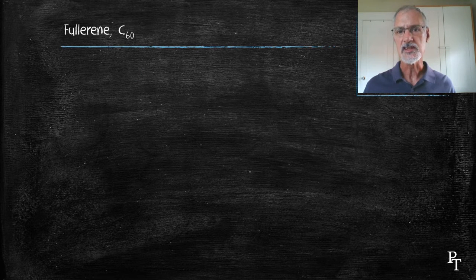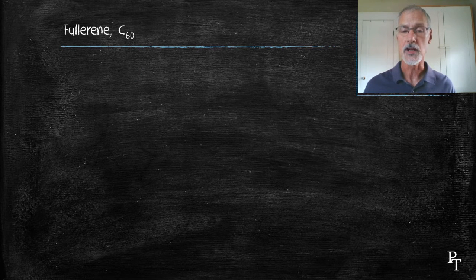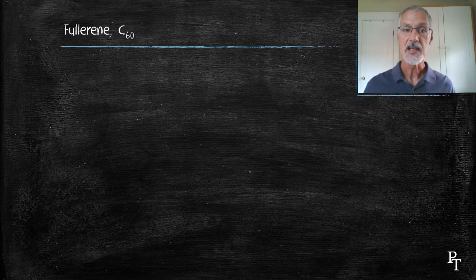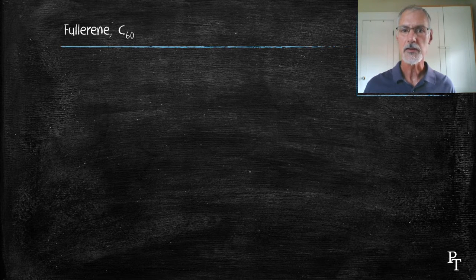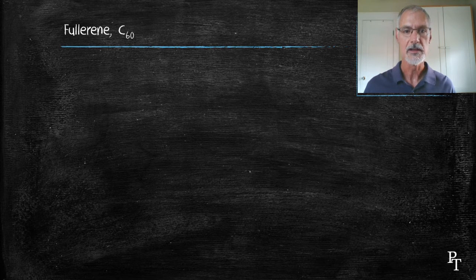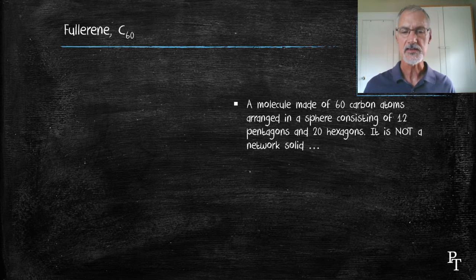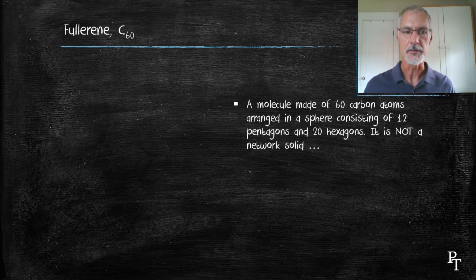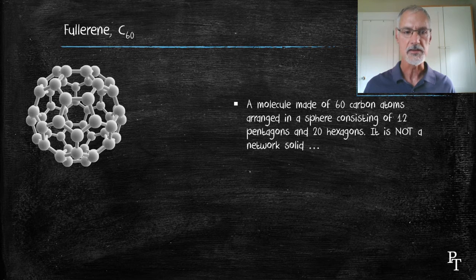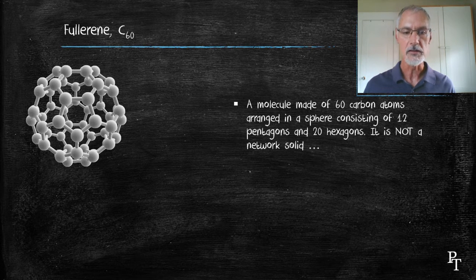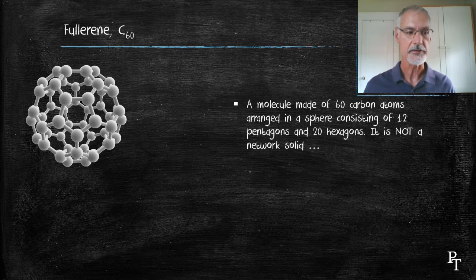C60 fullerene. Fullerenes are a class of compounds, a group of compounds. I'm going to look specifically at C60, but there are other variations. There's C70, C50, C48. But we're going to focus on C60, the first fullerene to be identified. First of all, it's a spherical arrangement of carbon, in which there are 60 carbon atoms, 12 pentagons, 20 hexagons.